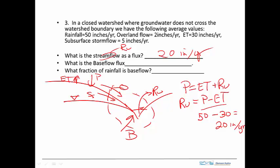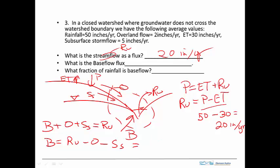The control volume is on the stream. We've got the base flow going in, plus the storm flow — which has overland and subsurface components — coming into the stream, and they equal the runoff going out. So we can solve for the base flow: that's runoff minus overland minus subsurface storm flow. So that's 20 inches per year minus overland of 2, minus subsurface storm flow of 5, giving us 13 inches per year of base flow.